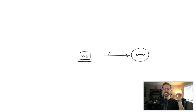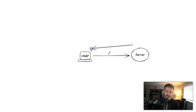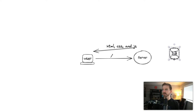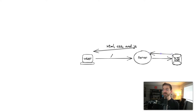This is how it traditionally works. A user logs into their computer, opens a web browser, goes to a given website, and sends a request to the server. The server responds back with assets including HTML, CSS, and JavaScript. Typically, the server takes that request, goes and gets any information it needs out of a database, uses that to generate the HTML markup, and sends back the HTML with any styling and JavaScript.